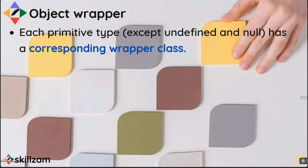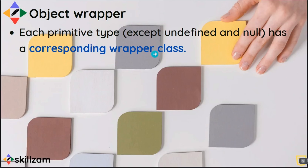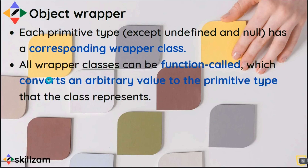Each primitive data type has a corresponding wrapper class. There are seven primitive data types in JavaScript, and except for undefined and null, all of them have a corresponding wrapper class. A class is a kind of data structure present in JavaScript. There is a built-in wrapper class available in JavaScript for all primitive types except undefined and null.